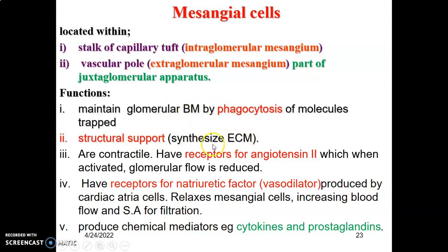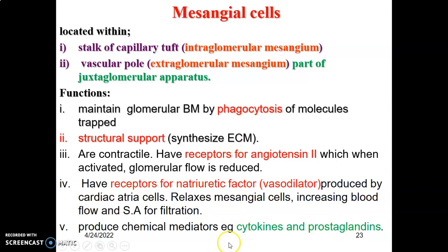Mesangial cells also help to synthesize extracellular matrix, giving structural support. Mesangial cells are contractile and have receptors for angiotensin II; therefore, when activated, they cause a reduction in glomerular flow. They also have receptors for atrial natriuretic factor, which is a vasodilator produced by the cells of the atrium of the heart. These receptors allow the mesangial cells to relax, increasing blood flow and surface area for filtration. Additionally, mesangial cells produce chemical mediators such as cytokines and prostaglandins.